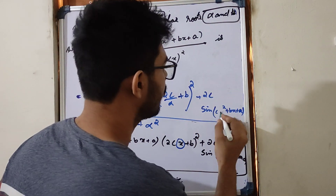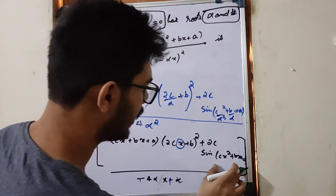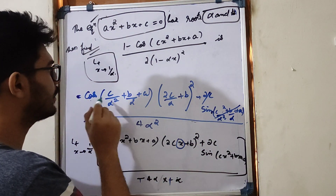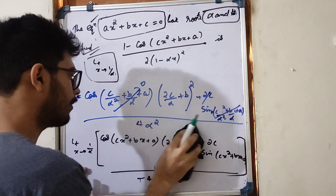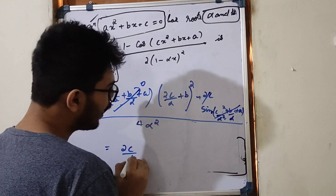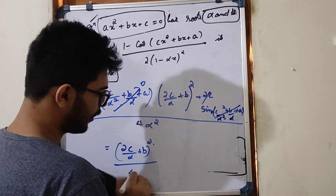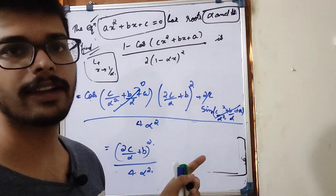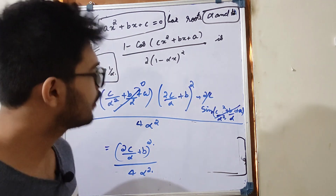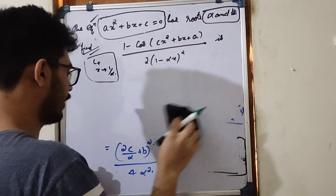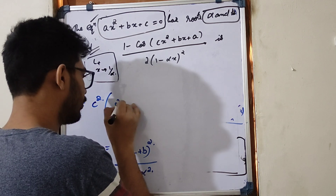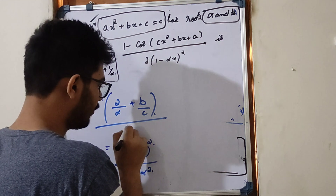We put x = 1/alpha, so alpha goes into x. The value of a·alpha² plus b·alpha plus c is 0, so sin(0) = 0, and cos(0) = 1. So finally the expression simplifies. The value equals (2c/alpha plus b) whole squared in the numerator, divided by 4·alpha squared in the denominator.